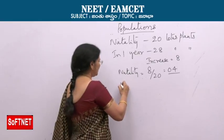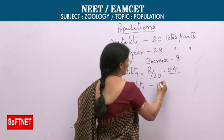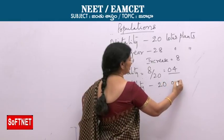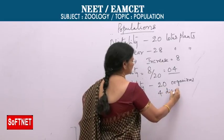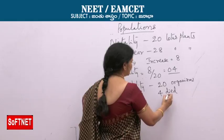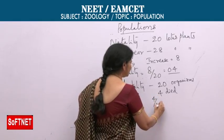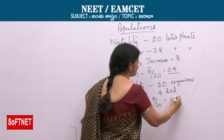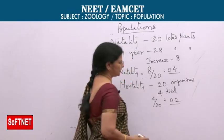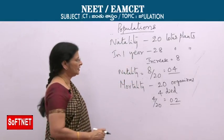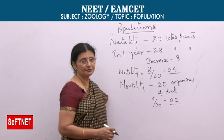Same way for mortality: suppose out of 20 organisms, 4 died. So the remaining are 16 only — reduced to 16 in one year. 4 by 20 is 0.2. So 0.2 is the mortality of this population. These are the ways they generally calculate natality and mortality of a population.